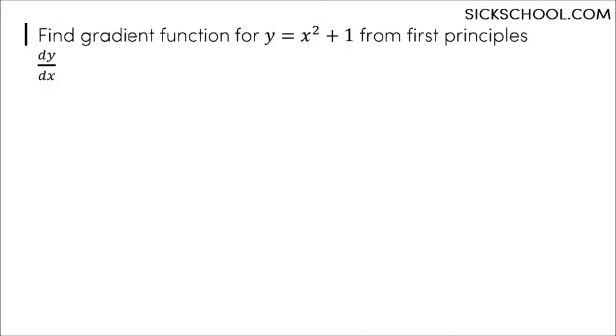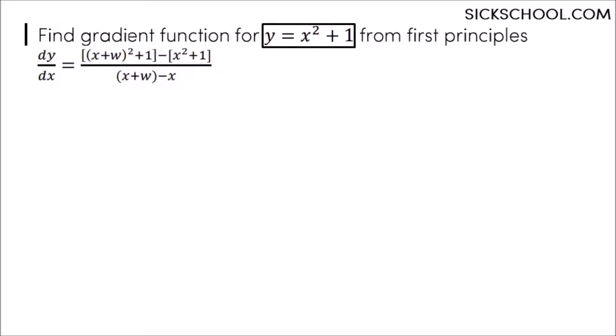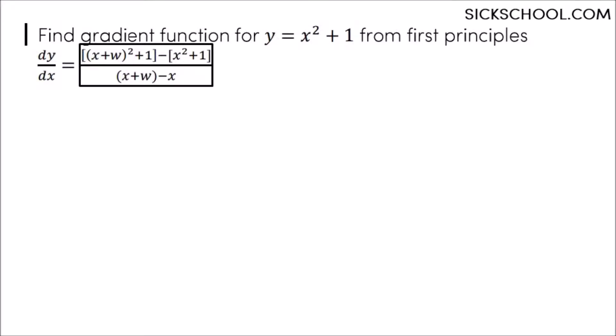The gradient is found in the usual way using two points that have these x values. Substitute them into the graph's equation to get the y values. Do the usual subtracting and dividing to get the gradient.